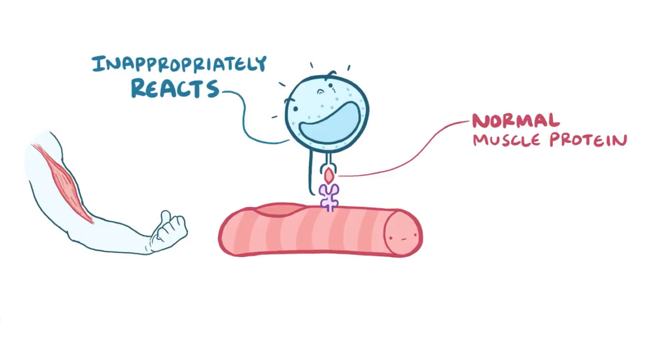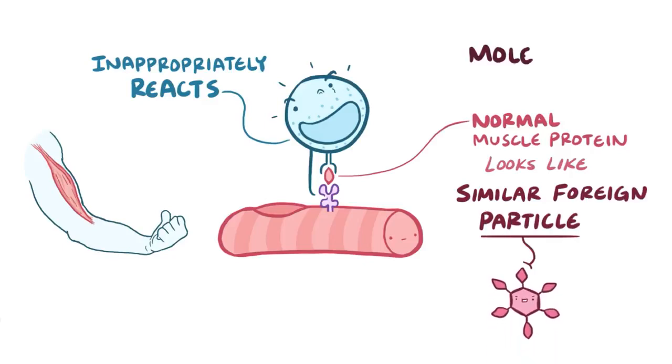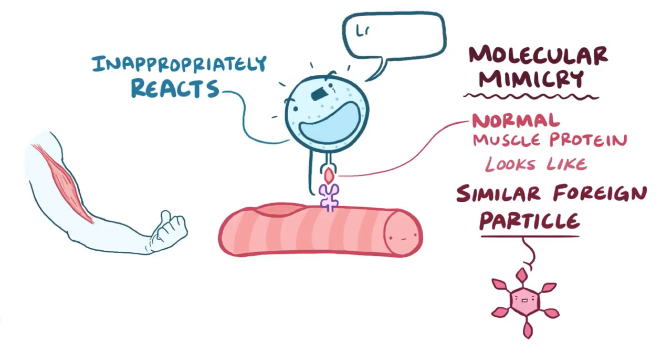That's because it's thought that the muscle proteins might look similar to a foreign pathogen, and this is called molecular mimicry, because from the perspective of the cytotoxic T cell, the host protein is mimicking a foreign protein. When our own protein triggers an immune response, that protein is called an autoantigen.